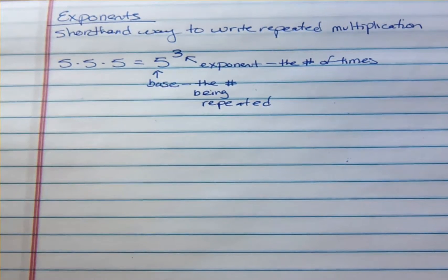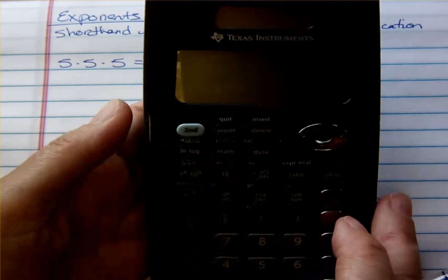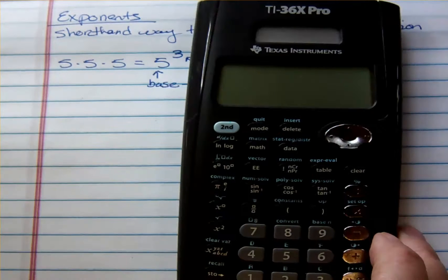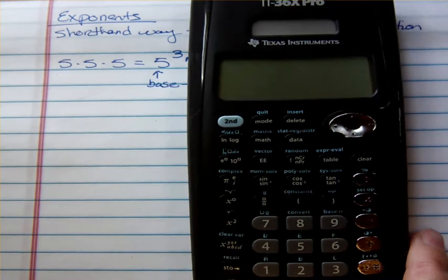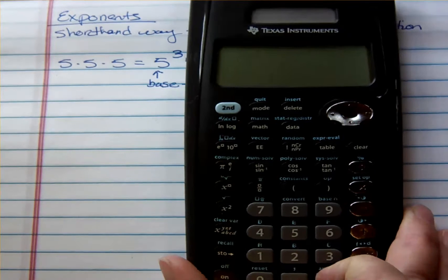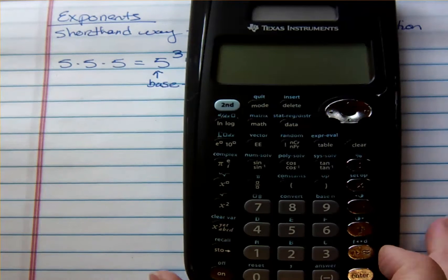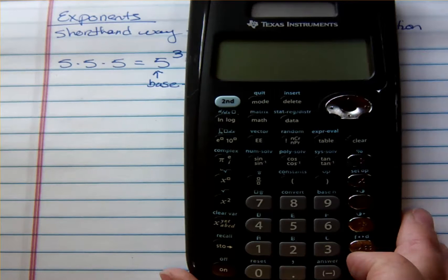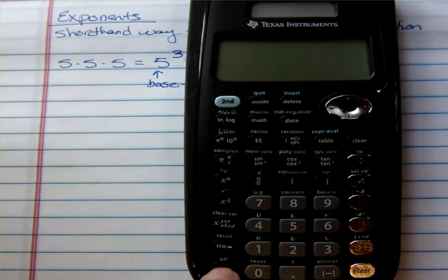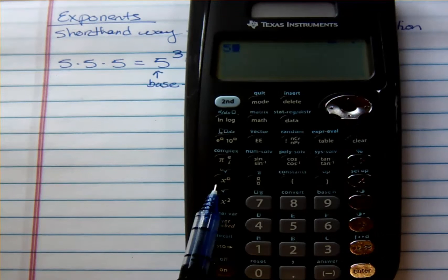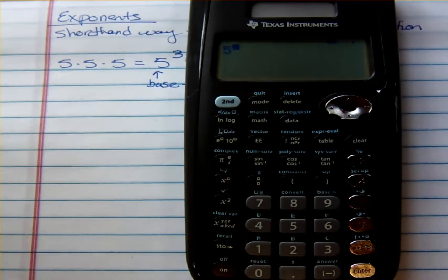You should be able to do exponents on your calculator. I was hoping you'd be able to see my calculator — this is a TI 36X Pro, which I like. If I wanted to do 5 to the third power, I would just put my 5 in — that's my base — and then use the X-to-the-power button and say third power. So 5 to the third power gives me 125.